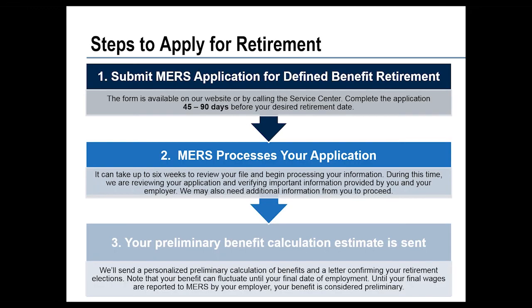To apply for retirement, the first step is to fill out your MERS application for a defined benefit retirement. You can find this form at the MERS website or get it from your employer. Fill out the application between 45 to 90 days prior to your desired retirement date — that gives MERS time to process your application. We may audit your account and double-check all numbers submitted over the course of your career. Generally about two weeks prior to your intended retirement date, you'll receive a preliminary benefit calculation stamped by one of our retirement analysts certifying it as the minimum you can expect to receive.